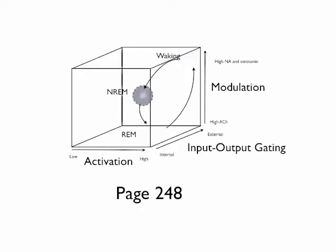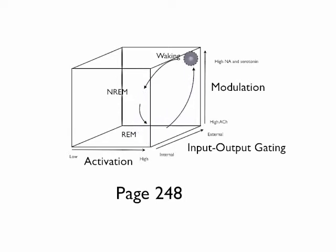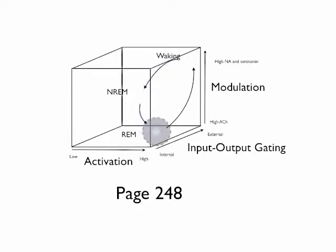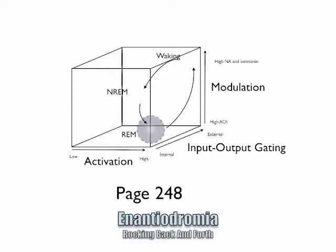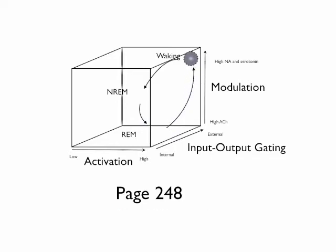Dr. Hobson pulls his AIM model together on a 3D graph on page 248. I've animated the graph here. If you're a trained Jungian analyst or a devotee of C.G. Jung like I am, try not to break your arm patting yourself on the back when you see this. They're proving on the level of the neurons and neurotransmitters in our brains that that old man really knew what he was talking about. The graph shows Carl Jung's idea of circumambulation, movement about a center, and enantiodromia, a rocking back and forth.